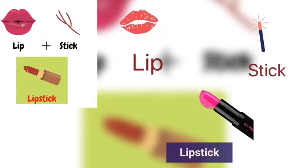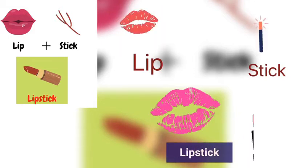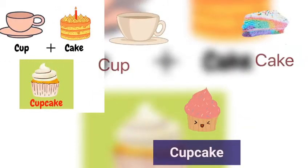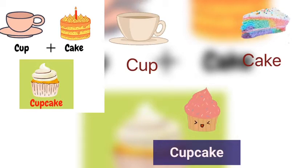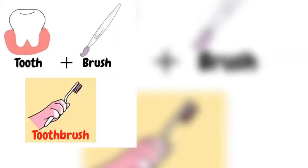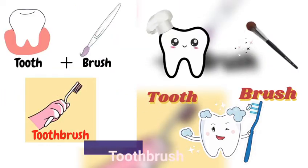'Lip' is one object, 'stick' is the second object — you connect them into 'lipstick'. 'Cup' is one object, 'cake' is the second object — you connect them into 'cupcake'. 'Tooth' is one object, 'brush' is the second object — you connect them into 'toothbrush'.